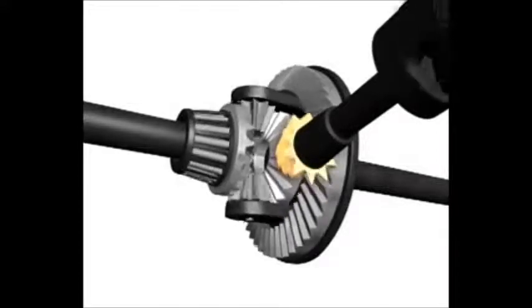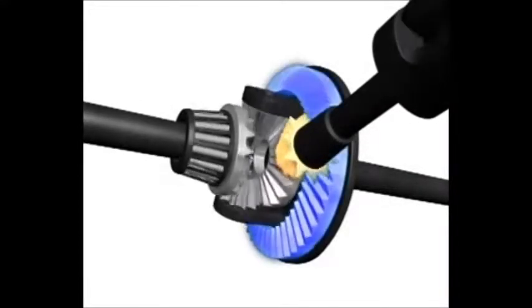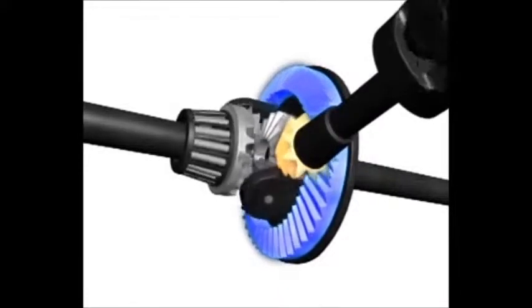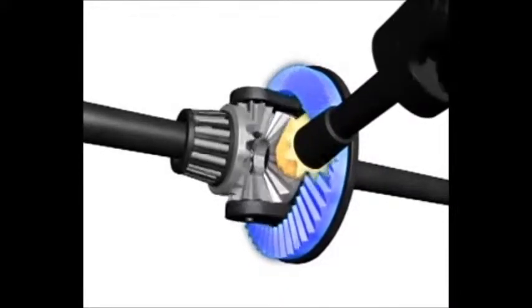A pinion gear is attached to the end of the drive shaft. This turns the ring gear. The ring gear surrounds a set of differential gears that enable the two rear axles to turn at different speeds.